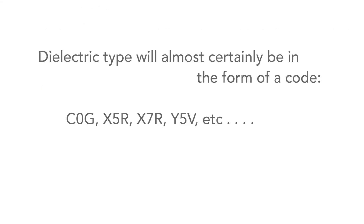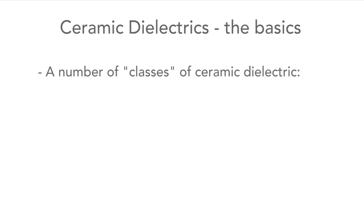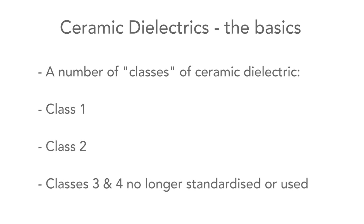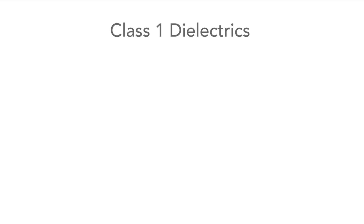If the dielectric type can be found then you know what you're talking about, but it's almost certainly in the form of a code so we'll need to explain this. The dielectrics that are used fall into one of two main classes — no surprise that they're called class 1 and class 2. There are classes 3 and 4 but they're not standardised these days and they're not very common, so we won't worry about them. First we'll check out class 1 dielectrics and later we'll cover the class 2 ones.